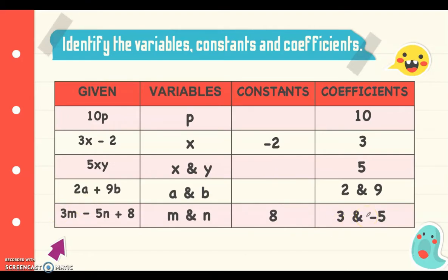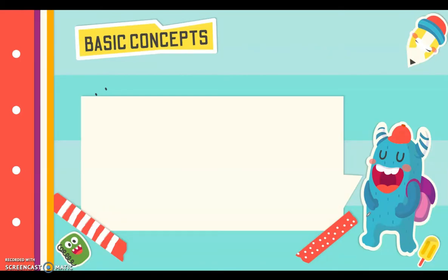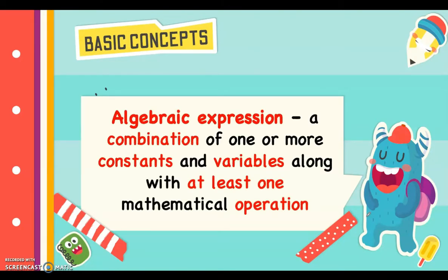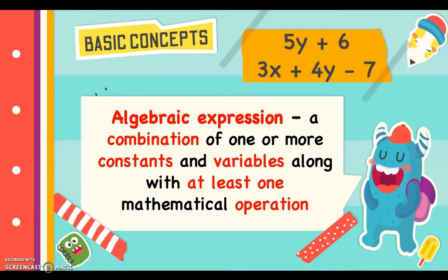Another concept we need to learn is algebraic expression. An algebraic expression is a combination of one or more constants and variables along with at least one mathematical operation. For example, 5y plus 6 is an algebraic expression. Since it says 'at least one,' there can be more operations — such as 3x plus 4y minus 7, which is also a combination of constants and variables with multiple operations.